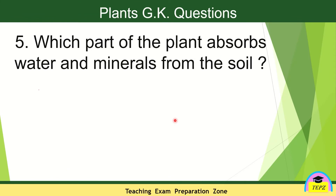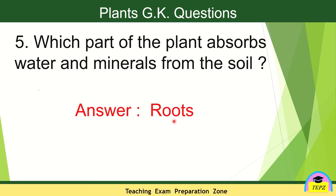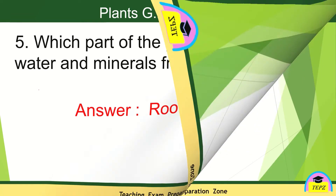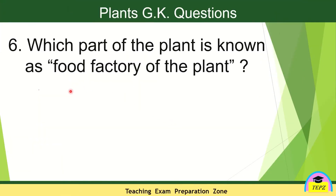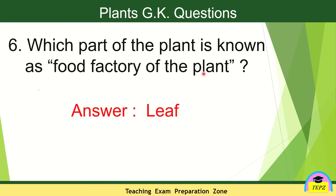Which part of the plant absorbs water and minerals from the soil? The answer is roots. Roots are underneath the soil, so roots absorb water and minerals from the soil. Which part of the plant is known as the food factory of the plant? Food is prepared in the leaves — so, the leaf is called the food factory of the plant.